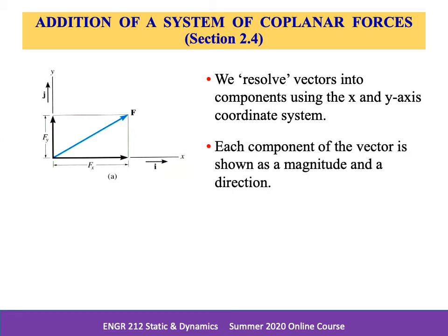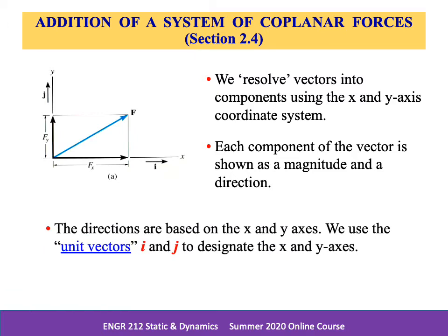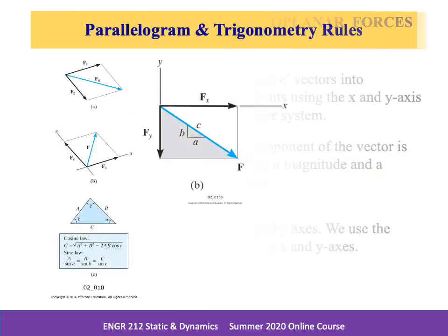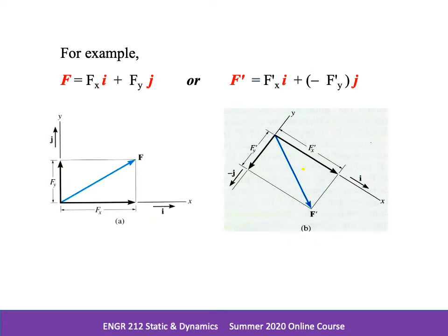Each component of the vector is shown as a magnitude and direction along the y-axis, called the j-component, and along the x-axis, called the i-component. We use these unit vectors, i and j, to designate the x and y-components respectively. Since the magnitude of each component is always a positive quantity, represented by the positive scalars F sub x and F sub y, we can express F as a Cartesian vector: F equals the force in the x-direction (the i-component) plus the force in the y-direction (the j-component).